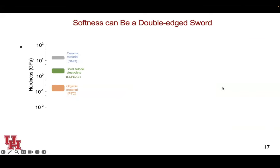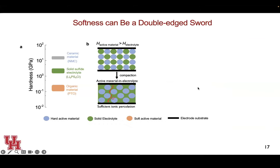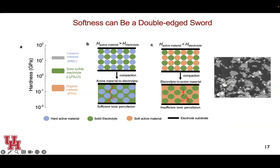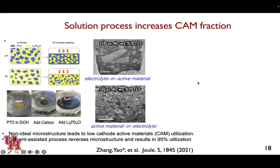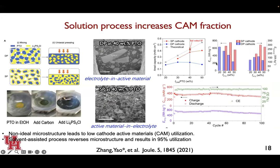Softness can be a double-edged sword — it indicates that microstructure in the battery is very important. We also developed a solution process to modify the microstructure, so that we can further improve the utilization of the active material at higher mass fraction, really improving the device-level and cell-level energy density.